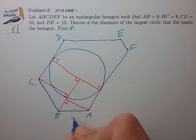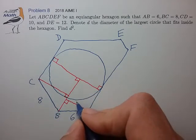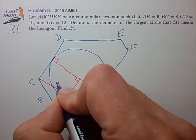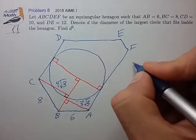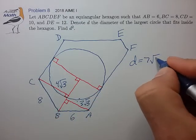And we know that AB is of length 6, BC is length 8. So we know that these lengths are 3 root 3 and 4 root 3. So the diameter is just the sum of these two lengths, 7 root 3.